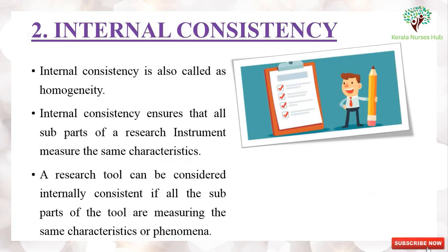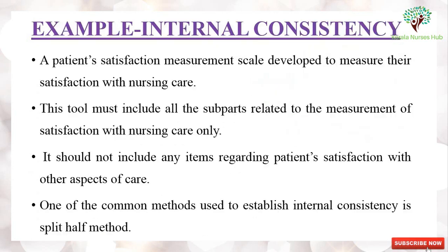The second aspect is internal consistency, also called homogeneity. Internal consistency ensures that all the sub-parts of the research instrument measure the same characteristics. A research tool can be considered internally consistent if all the sub-parts of the tool are measuring the same characteristics or phenomena.